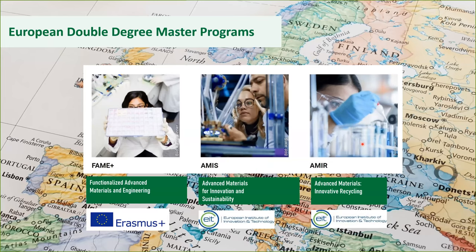Now we move to the European programs, which are organized on a smaller scale with European partners. The idea is the same — you get a diploma certificate from TU Darmstadt and from one of the partner institutions. For these programs you don't apply through TU Darmstadt but through independent application systems, which you can find on our web page. They also have different sponsors, and there is an option not only to pay fees but also to apply for scholarships, making these programs attractive.